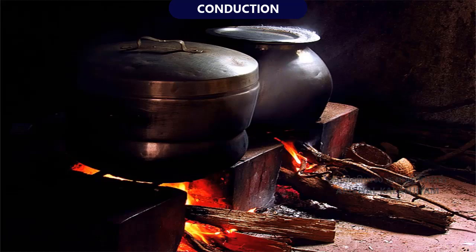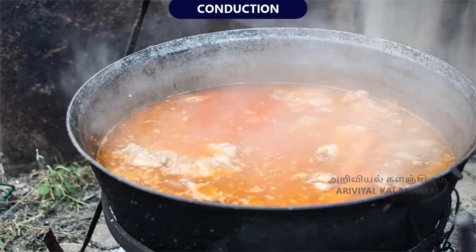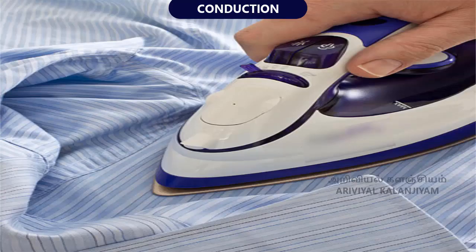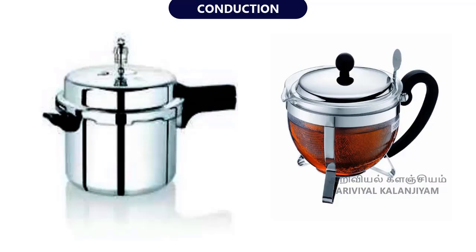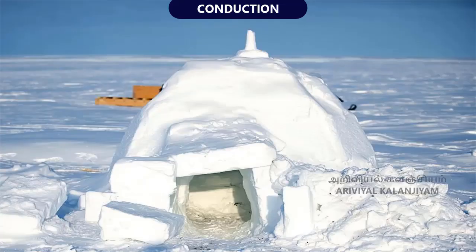We cook food in vessels made up of metals. When a vessel is heated, heat is transferred from the metal to the food. When we iron dresses, heat is transferred from the iron to the cloth. Handles of cooking utensils are made up of plastic or wood because they are poor conductors of heat. The temperature inside the igloo, that is a snow house, is warm because snow is a poor conductor of heat.